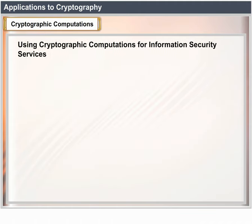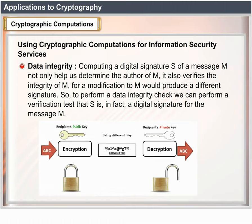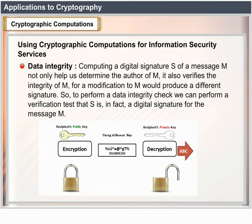Using cryptographic computations for information security services. Data integrity: computing a digital signature S of a message M not only helps us determine the author of M, it also verifies the integrity of M, since a modification to M would produce a different signature. To perform a data integrity check, we can perform a verification test that S is, in fact, a digital signature for the message M.